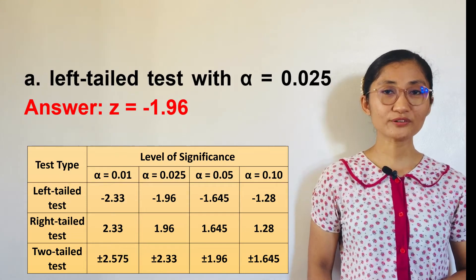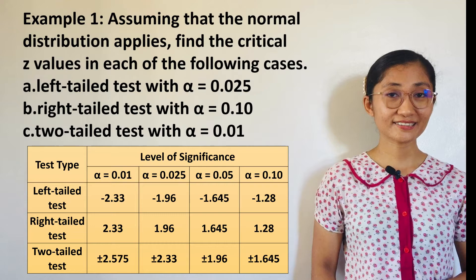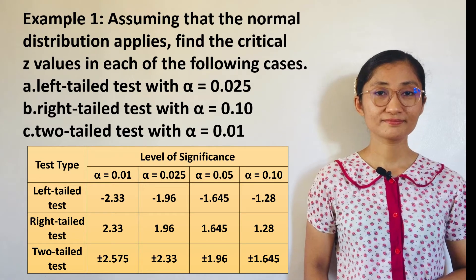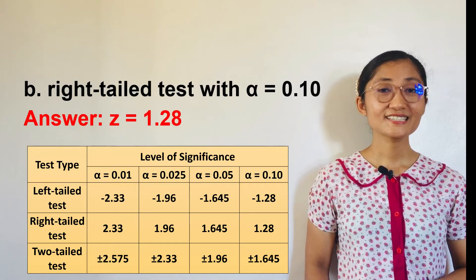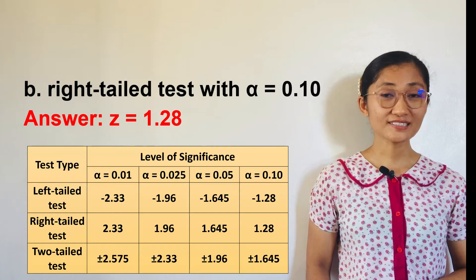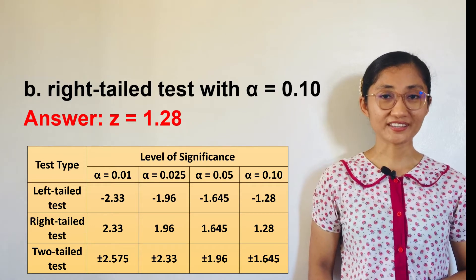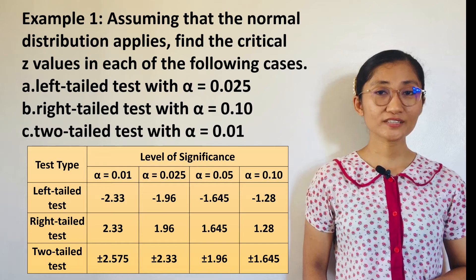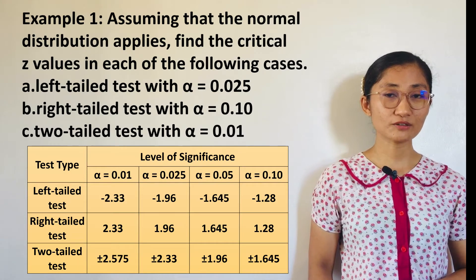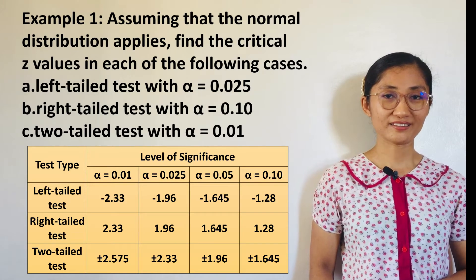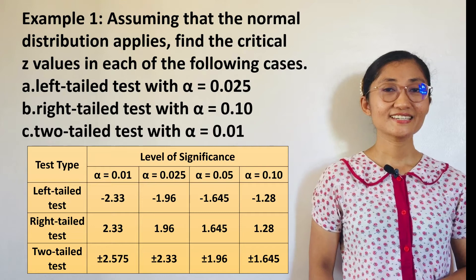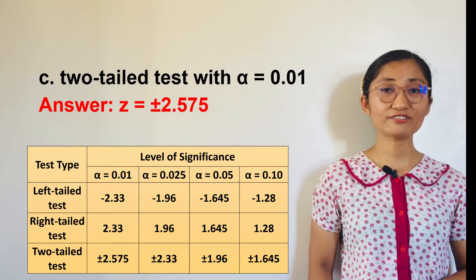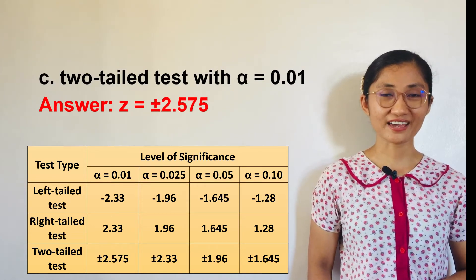For letter B, right-tailed test with alpha equals 0.10, the answer is Z equals positive 1.28. For letter C, two-tailed test with alpha equals 0.01, the answer is Z equals positive/negative 2.575.